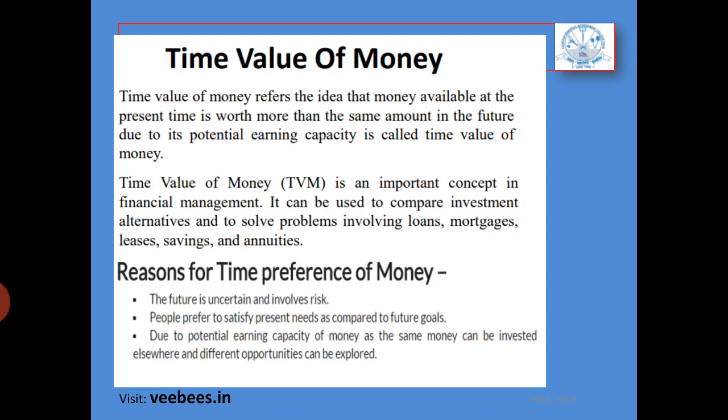The reasons for time preference of money: because future is uncertain and involves risk, people prefer to satisfy present needs as compared to future needs. Due to potential earning capacity of money, the same money can be invested elsewhere.